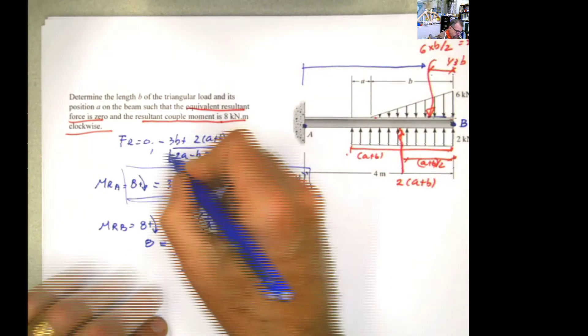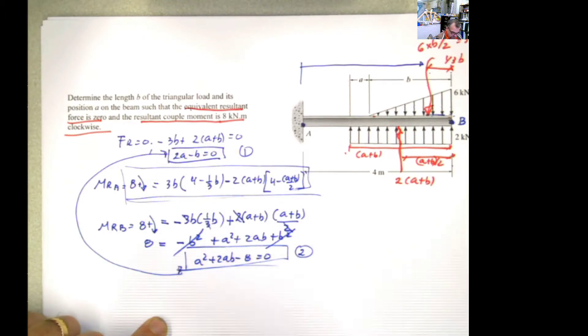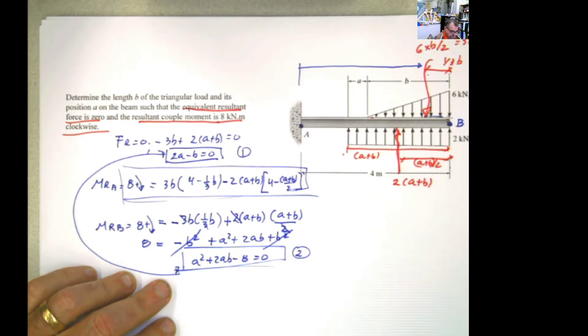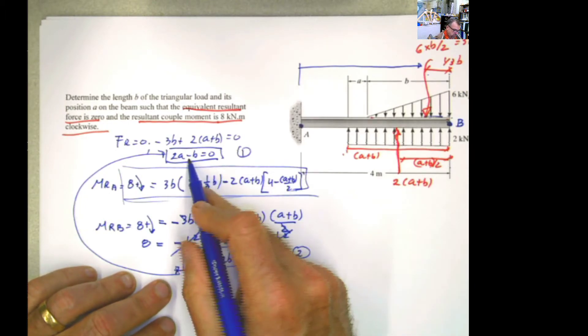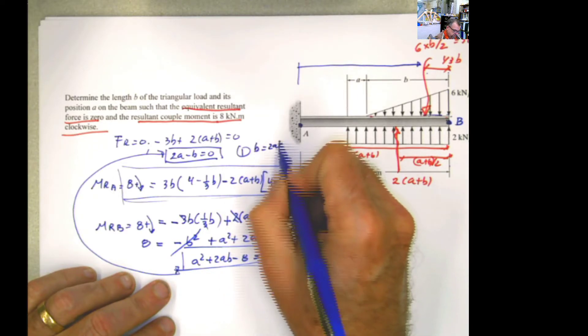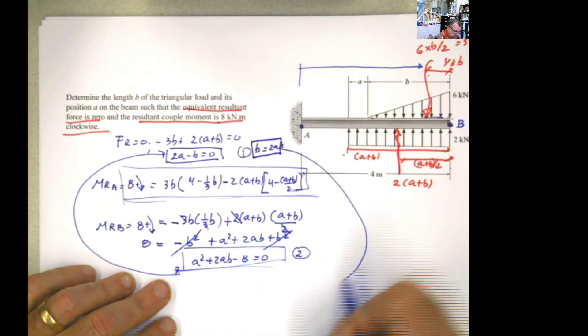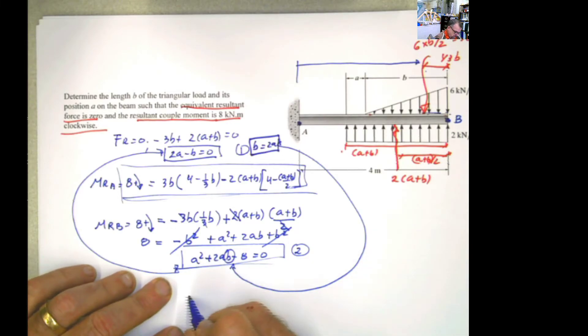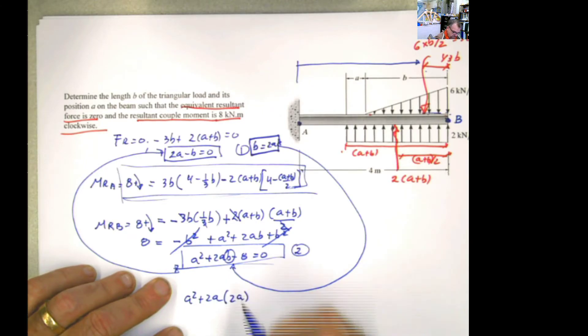Now I have to solve this system of equations. I can use several approaches. But the easiest one, in this case, will be substitution, in my opinion. So you can solve here for b and say b is equal to 2a. And then I'm going to substitute that into this b here. Then I will have a squared plus 2a multiplied by 2a, which is b, minus 8 equals 0. And then what do you get?